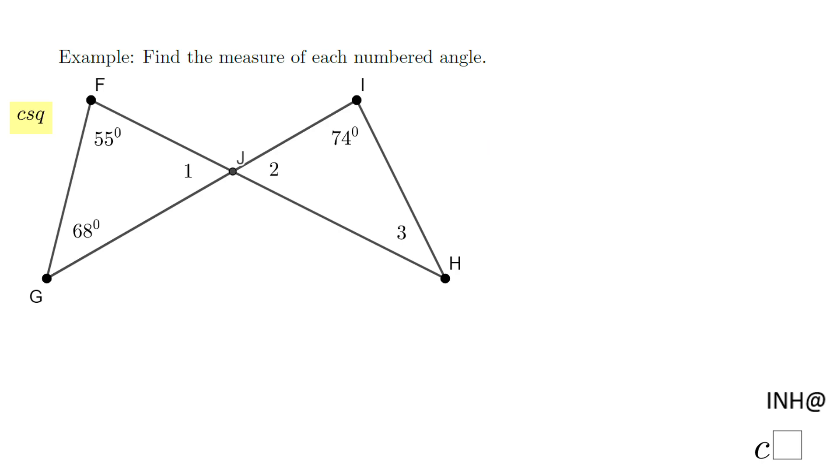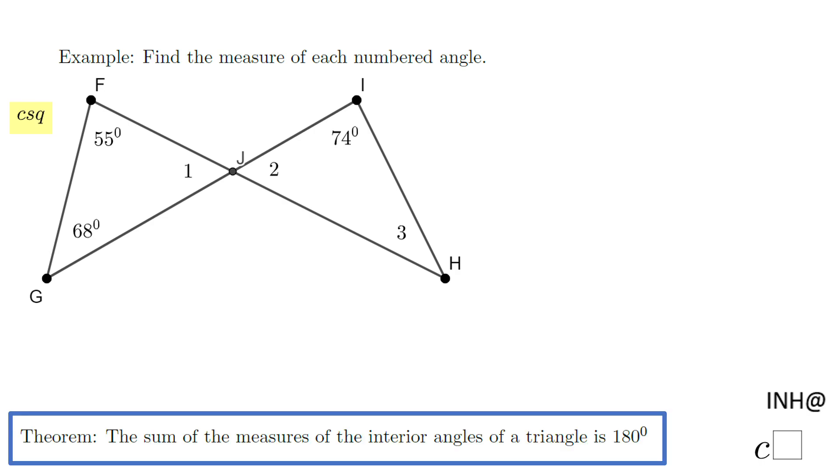Welcome or welcome back at I Need Help at C Squared. In this example we're going to find the measure of three numbered angles: 1, 2, and 3. For that reason, I'm going to use this theorem you see down here: the sum of the measures of the interior angles of a triangle is 180 degrees. I'm going to start with angle 1 because if you notice, this